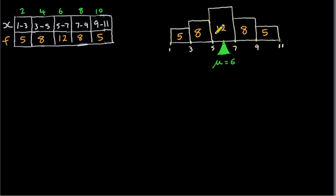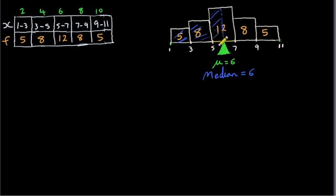What about the median of this distribution? The median is the value of x that bisects the area of this distribution. This value is six. It not only is a balance point if we think of our histogram as a set of weights, but it bisects the area. The area to the left of x equals six is the same as the area to the right of x equals six. So for a perfectly symmetric distribution, the mean is equal to the median.